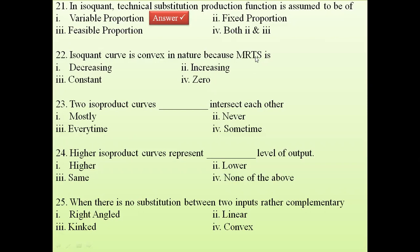Question 22: The isoquant curve is convex in nature because MRTS (marginal rate of technical substitution) is decreasing. Since MRTS is decreasing, the isoquant is convex in nature — option one, decreasing, is the answer.